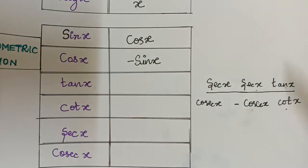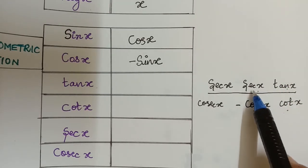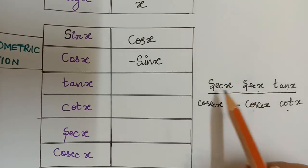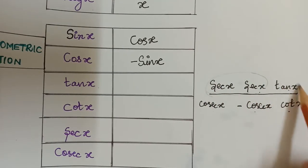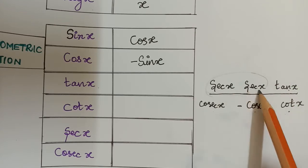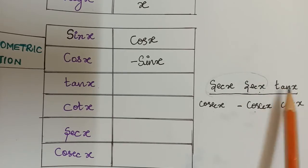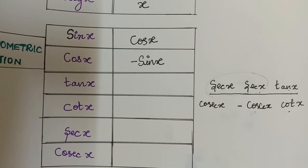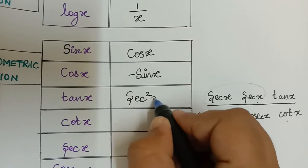For tan x — locate tan x in that row. Leaving tan x, the other two terms in that row are sec x and sec x. Multiply these two remaining terms to get the differentiation of tan x. So leaving tan x, the remaining terms are sec x and sec x, and multiplying gives sec²x. Therefore the differentiation of tan x is sec²x.